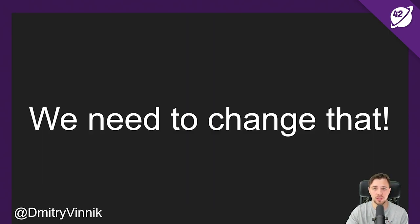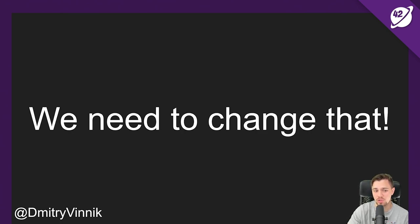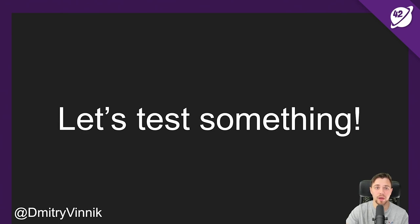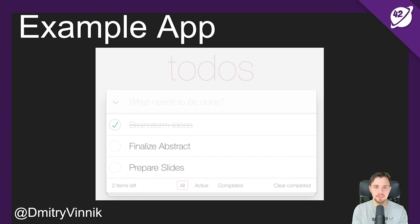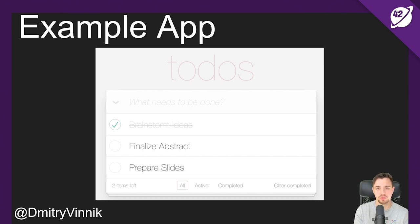We need to change these anti-patterns. Throughout today's presentation we'll use a simple to-do app — the kind of app commonly used for UI framework examples with Angular, React, Svelte, and many others. You add a to-do, you check-mark it, you delete it, and you filter items by completed or active.